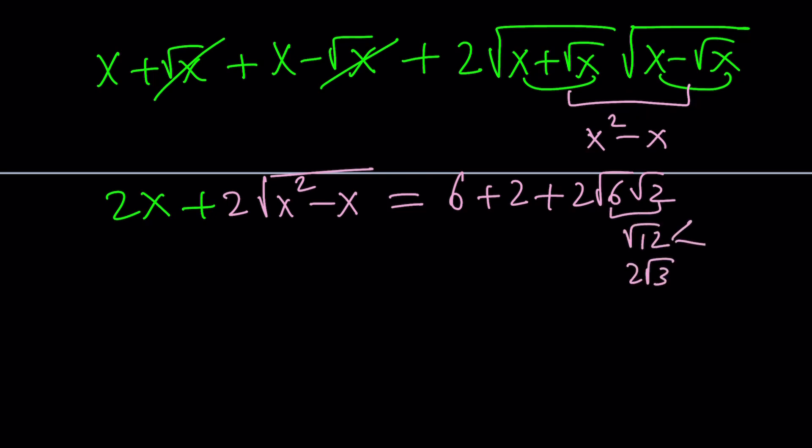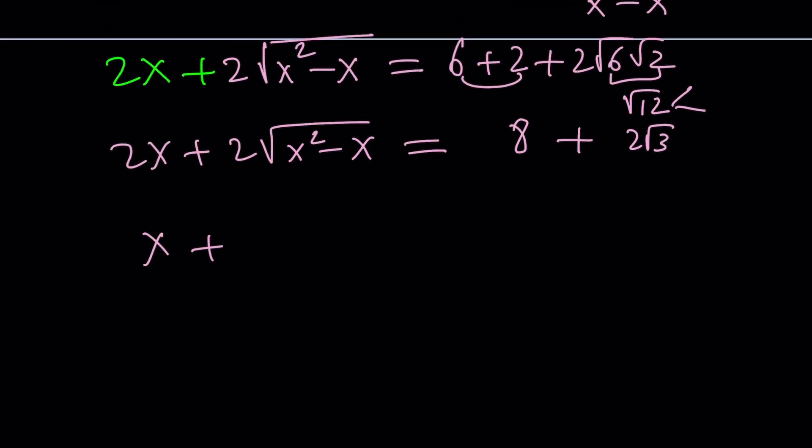And root 12 can actually be written as 2 root 3. If you think about it, this can be factored as 4 times 3. And this will become an 8. So from here we basically get 8 plus 4 root 3. And at this point, we can go ahead and divide both sides by 2. And that gives us x plus the square root of x squared minus x equals 4 plus 2 root 3.